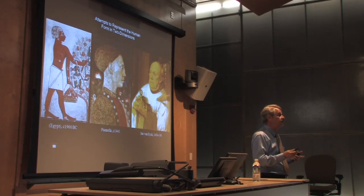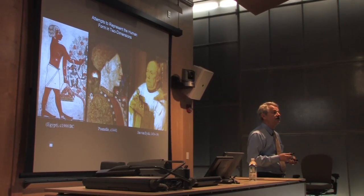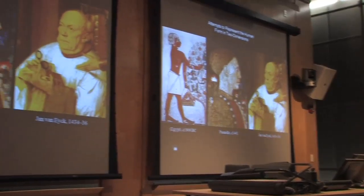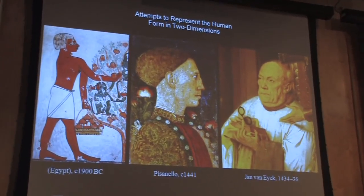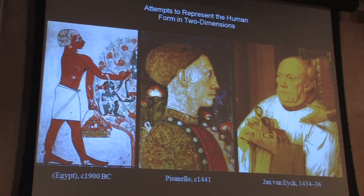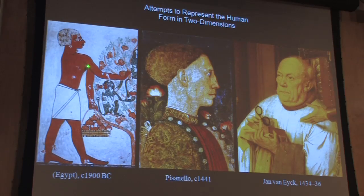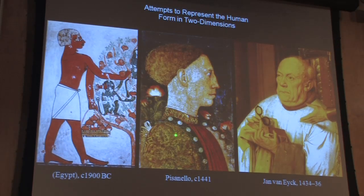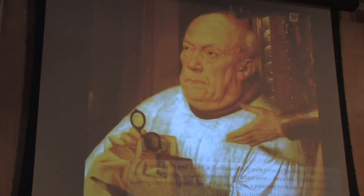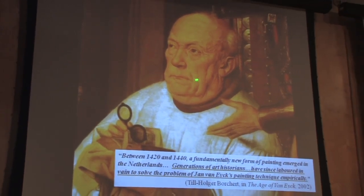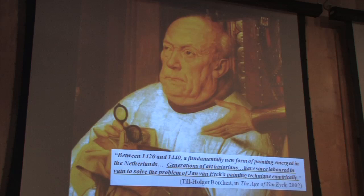If we go back in time and look at attempts to represent the three-dimensional human form in two dimensions — which is not an easy problem — we see 4,000 years ago that figures are flat and two-dimensional. Coming forward in time, they become more elaborate but still flat and two-dimensional. Then we come to Jan van Eyck. If I magnify this person, how did he get that realism? If this person walked out from behind the screen right now, all of you would immediately recognize him.